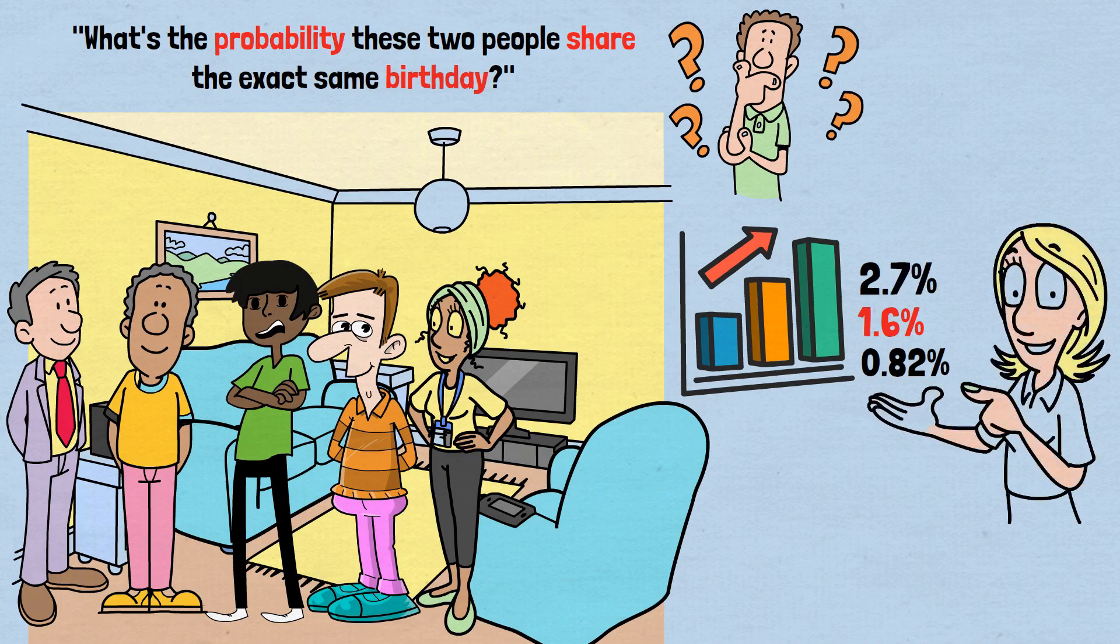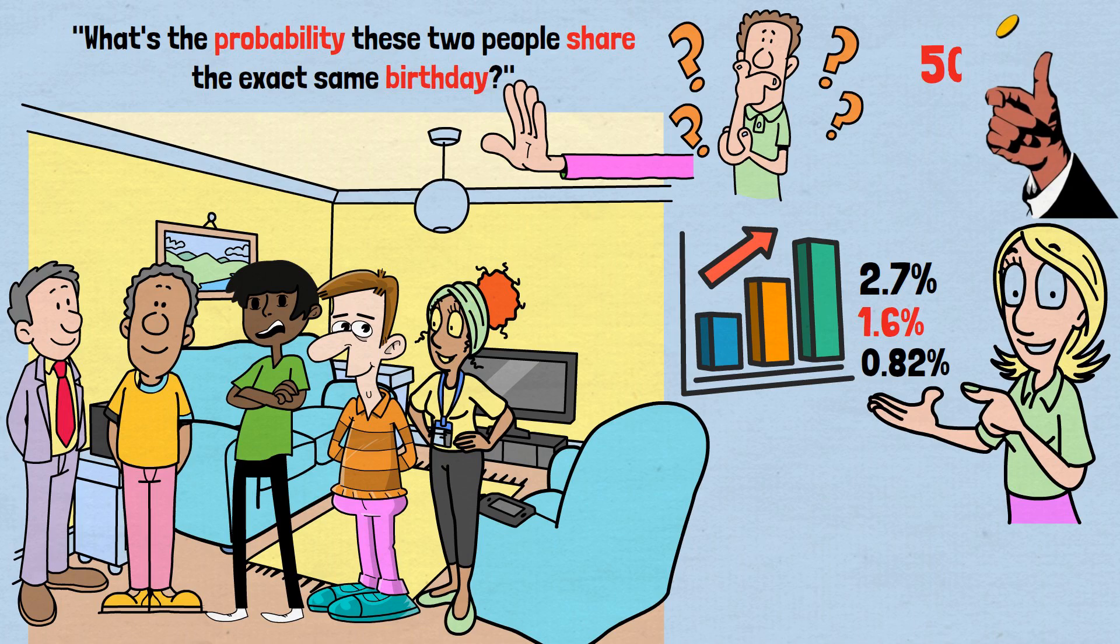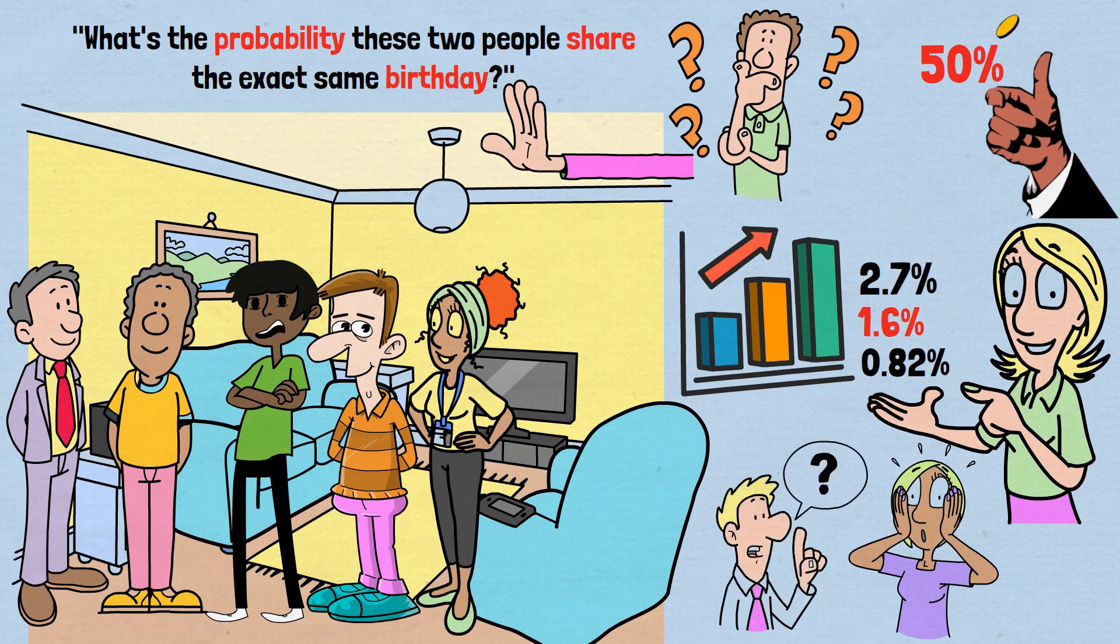Each new person increases our chances, but even with five people, we're nowhere near a coin flip's 50% probability. So here's the question that stumps almost everyone. How many people need to be in this room for it to become more likely than not? That's greater than 50% probability, that at least two of them share the exact same birthday.